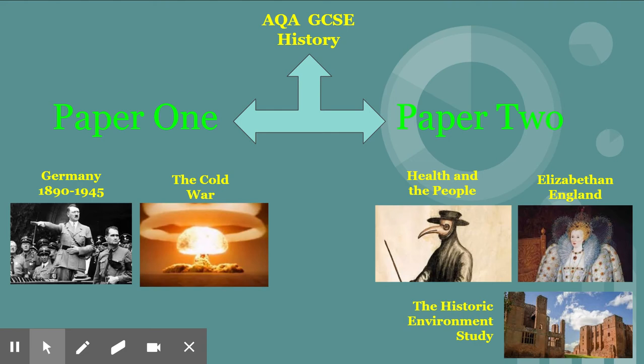All four modules work really well together. The Germany and the Cold War modules support each other to give you a really good grasp of the 20th century. The Health and the People and the Elizabethan England modules go further back in time. Particularly with Health and the People, you get that big view over historical change. And with Elizabethan England, you start to see how events as far back as the 1500s and 1600s actually set the foundations for the world that we live in today.